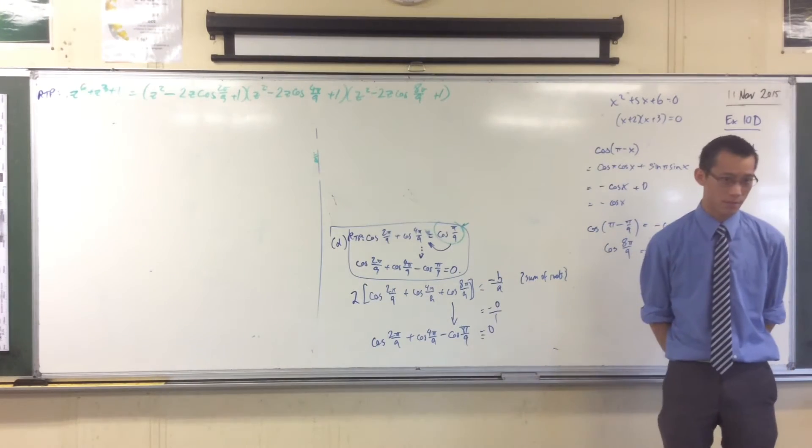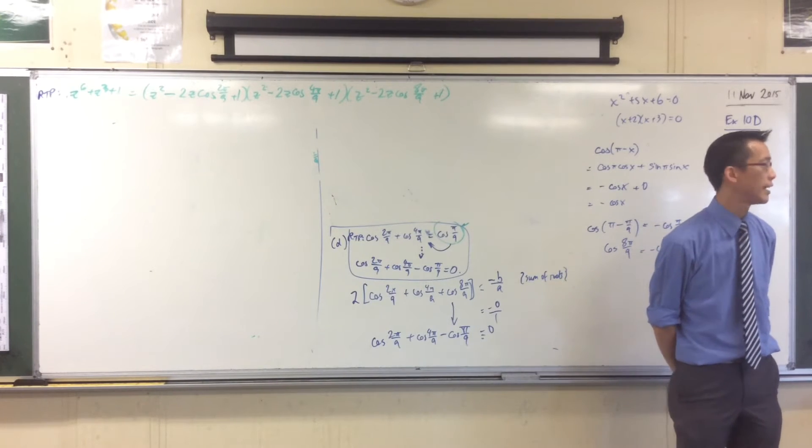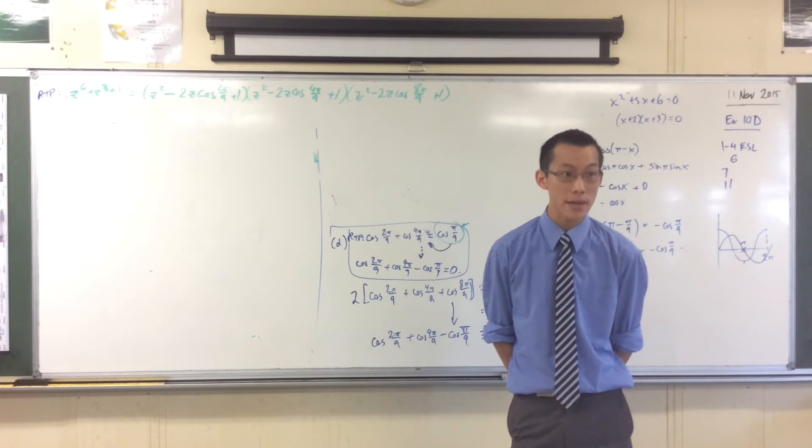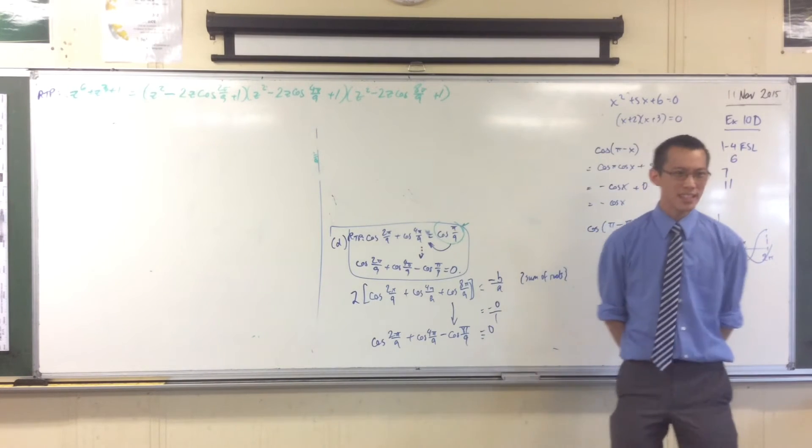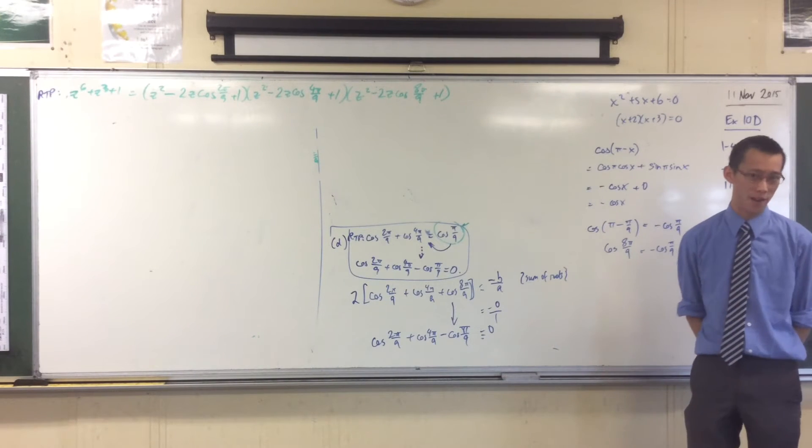Example, have a look at the arguments. Have a look at the arguments. 2 pi on 9, 4 pi on 9, 8 pi on 9. Is this likely to be in connection to the previous part? Definitely. Now, I would actually suggest no. I think D gets skipped over.